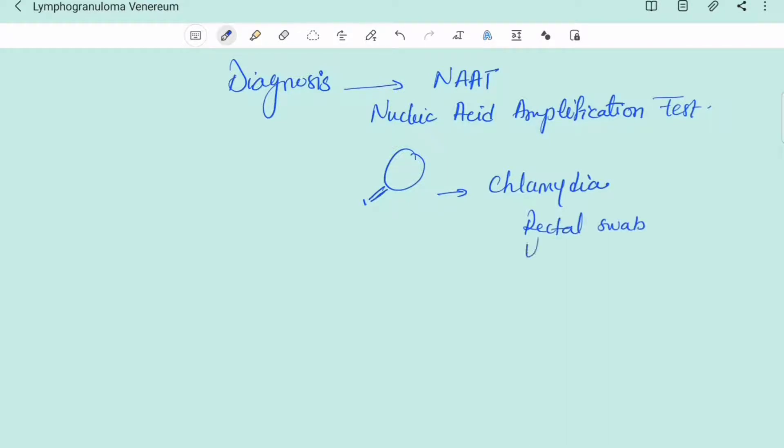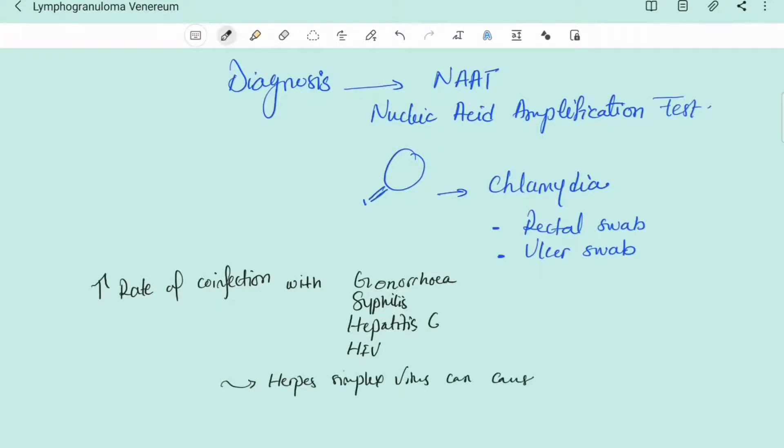The diagnosis of lymphogranuloma venereum can be done through a nucleic acid amplification test, NAAT, which is looking for chlamydia, and that can be through a rectal swab or an ulcer swab. There is an increased rate of co-infection with gonorrhea, syphilis, hepatitis C, HIV, and in patients with proctitis, we should always suspect herpes simplex virus.